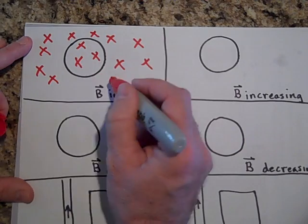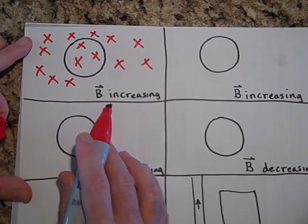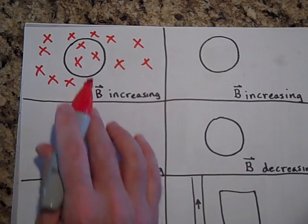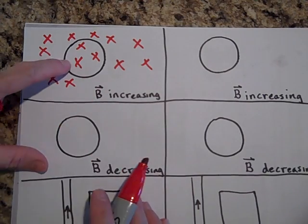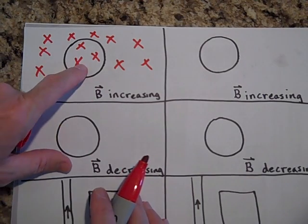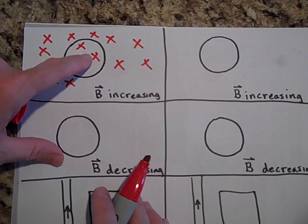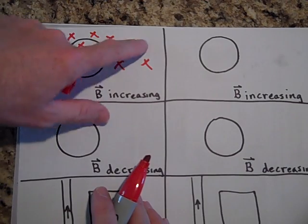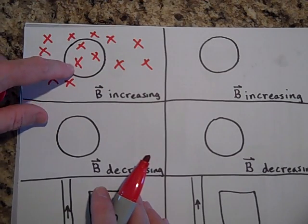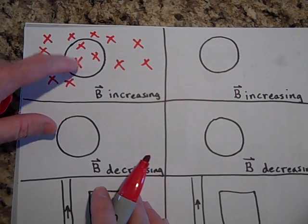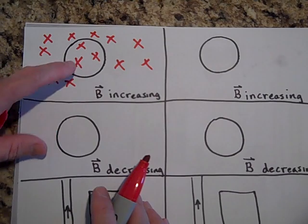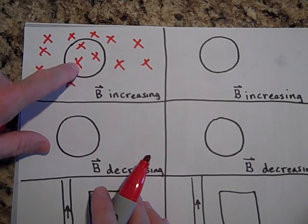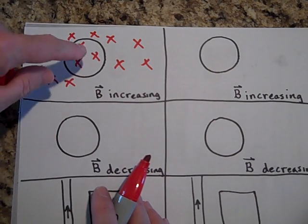The x's are increasing. If the x's are increasing, this hoop is not going to be happy — to personify it again. It doesn't care about the field outside, but the inside ones it's going to try to stop from increasing by making its own field that is dots — a field going out.